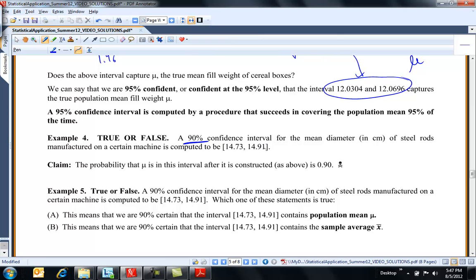A 90% confidence interval. This is a true or false. A 90% confidence interval for the mean diameter of steel rods is computed to be this. The probability that mu is in the interval after it is constructed above is 90%. Well, after the interval is constructed, either mu is in there or mu is not in there. So this is kind of a trick question. The probability that mu is in the interval after it is constructed is either 0 or 1. Before you construct the confidence interval, you have a 90% chance your interval will capture mu. But after it's made, it's a sure thing, and either it did or it didn't. So this is kind of a trick question.